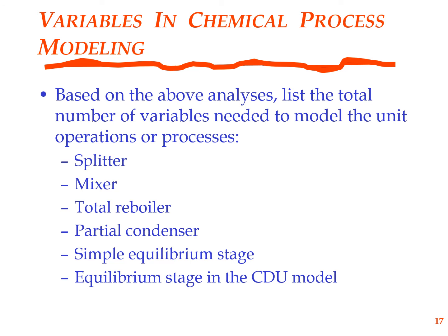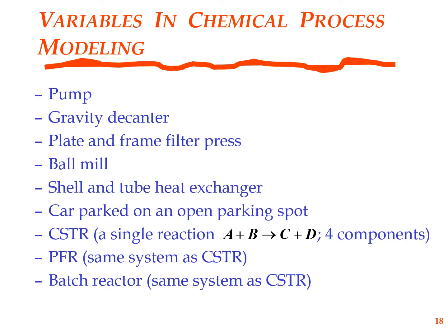By listing the total number of variables, you have completed the first step of modeling. Then you have to start writing the various equations, do a degree of freedom analysis, specify the various parameters that need to be specified, and then go ahead and solve the resultant set of equations — either by analytical solution by hand or on a computer. That would be your simulation. These units presented are by no means an exhaustive set; they are given for you to ponder over a variety of different unit types and think about how this kind of modeling can take place. These are all units you have studied in your chemical engineering courses earlier.